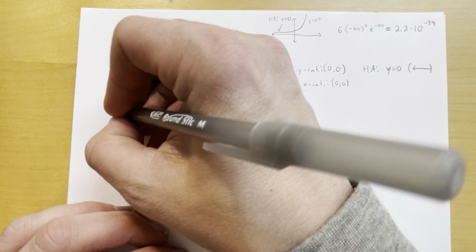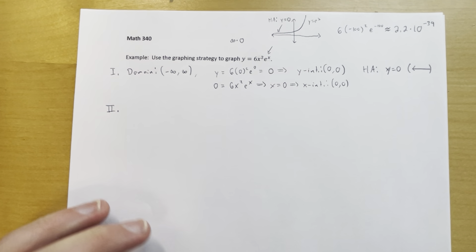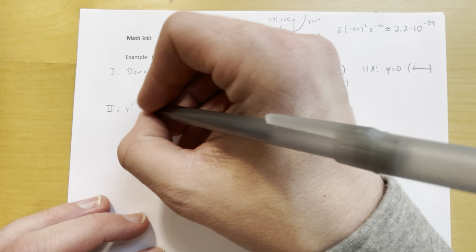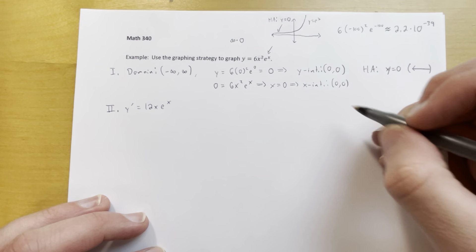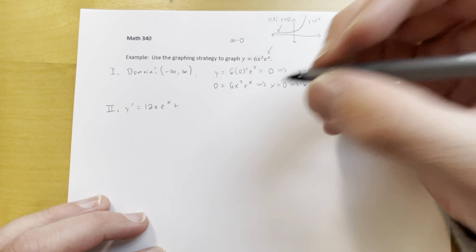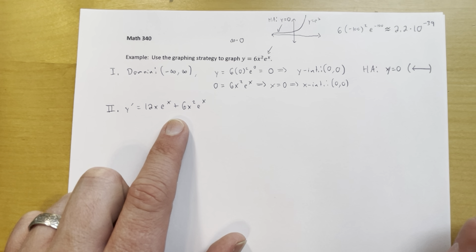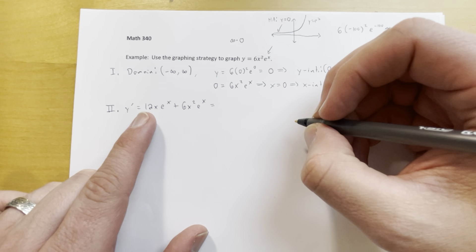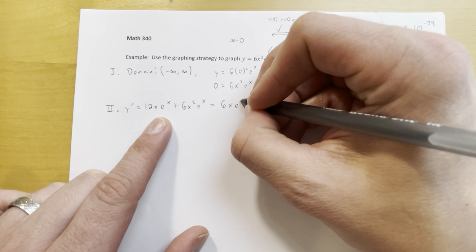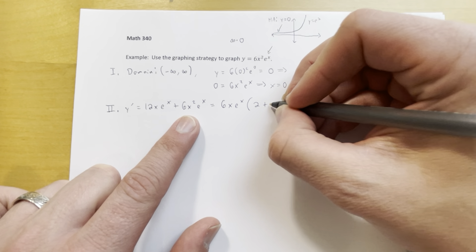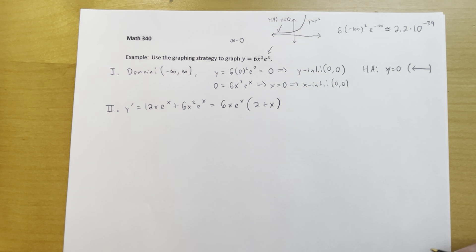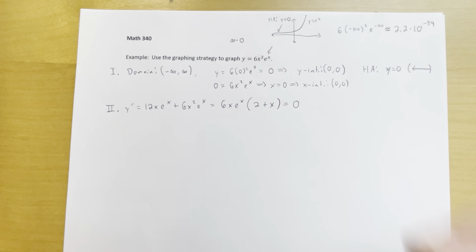Now step two — we want to look at the first derivative. To take the derivative, I'll need the product rule. y prime equals 12x times e to the x, plus 6x squared times e to the x, since e to the x is its own derivative. In this section, we want to factor things. I can factor out 6x e to the x, leaving behind 2 plus x. So y prime equals 6x e to the x times (x plus 2).